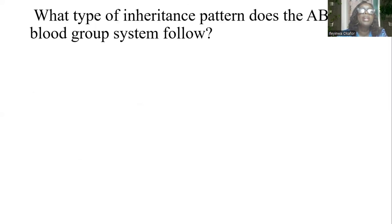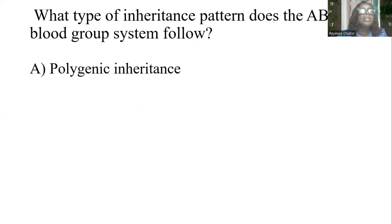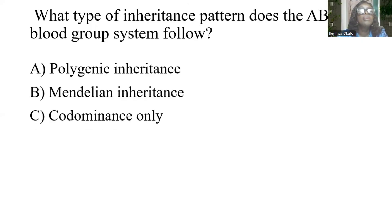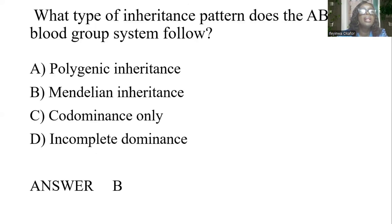What type of inheritance pattern does the ABO blood group system follow? A) Polygenic inheritance. B) Mendelian inheritance. C) Codominance only. D) Incomplete dominance. The answer is B: Mendelian inheritance.